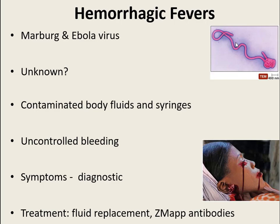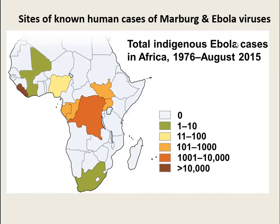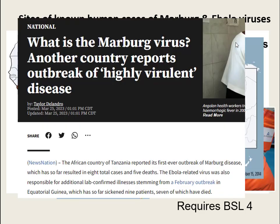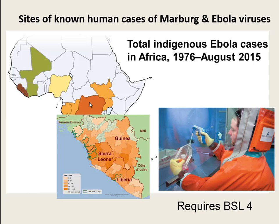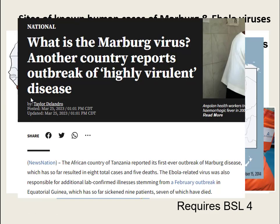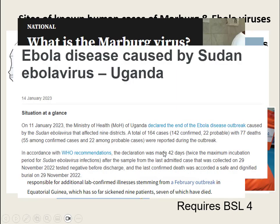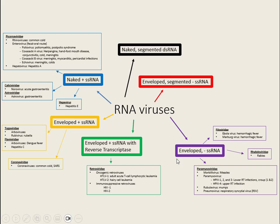In the United States we don't generally have cases of Marburg and Ebola, except in individuals who have traveled to endemic areas. Most cases of Ebola and Marburg are found in Africa, particularly on the western coast. There was a Marburg outbreak in Africa around 2023–2024, and Uganda was having another Ebola outbreak. Africa seems to be where these viruses are most endemic.